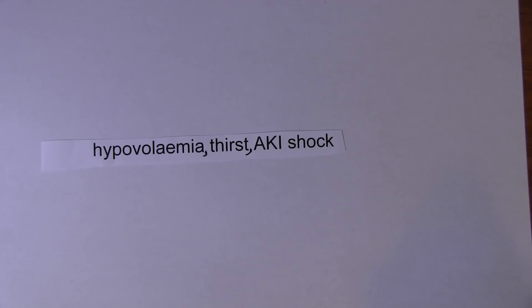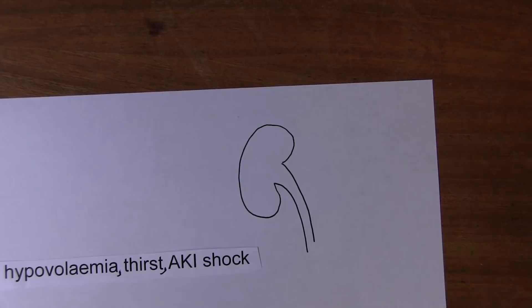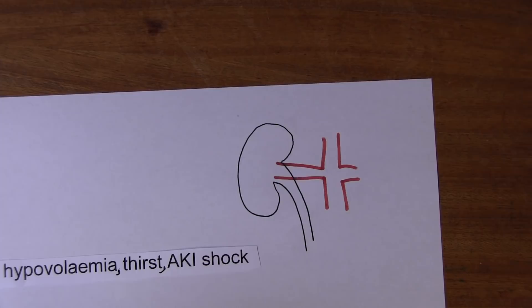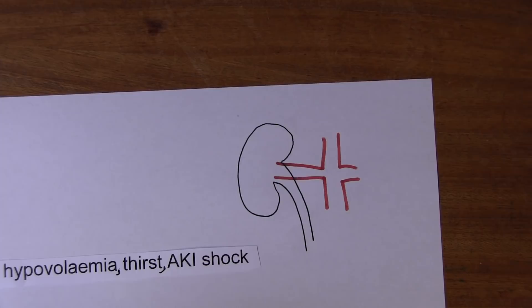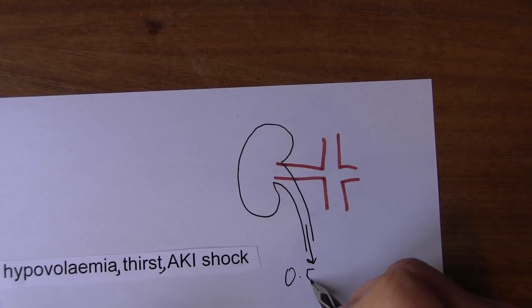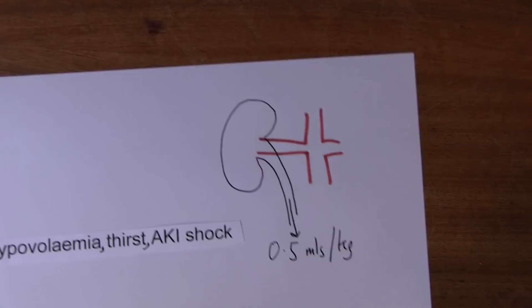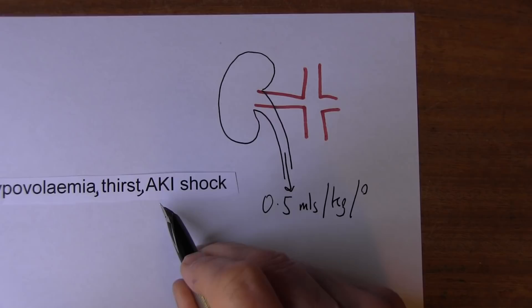If there's a reduced blood supply going through the kidneys — reduced renal perfusion because there's less blood accessing via the renal arterial system — hypoperfusion of the kidneys will lead to reduced urine volumes. We have to make sure that we get 0.5 mils of urine per kilogram of the patient's body weight per hour; otherwise we're at risk of acute kidney injury, which we certainly don't want.